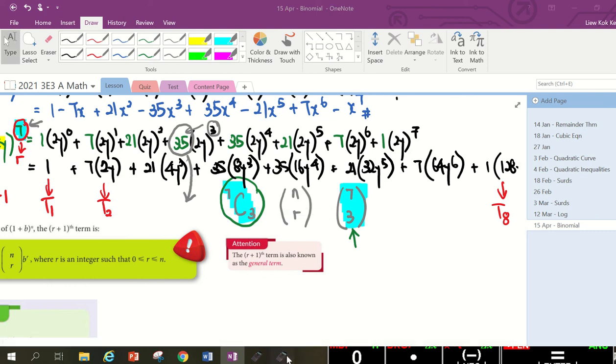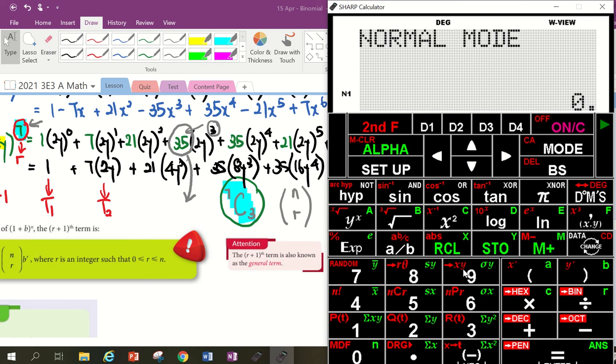7 choose 3. Where do you see 7 choose 3? Number 5. Can you see number 5? There's a n choose r. So, how am I supposed to press this? Yes. You need to use shift. Cannot. If you press choose, you forgot the first number. You must press the 7 first. 7, shift, choose. We want 3 because it's power 3, right? What's your answer? 35.